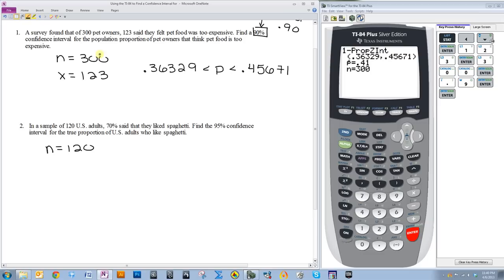Now, in the previous example, we were given X. In this example, we are not. We are given the percentage that responded positively to liking spaghetti.